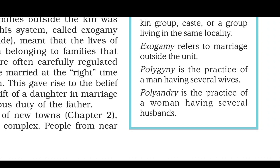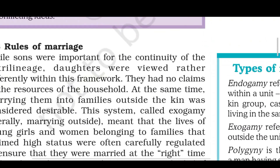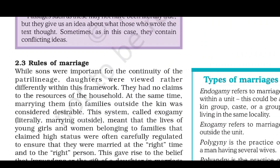Polyandry is the practice of women having several husbands. We have only read about this in the Mahabharata — Draupadi, who married all five Pandava brothers. So that practice is called polyandry. These were the types of marriage. Now what were the rules?